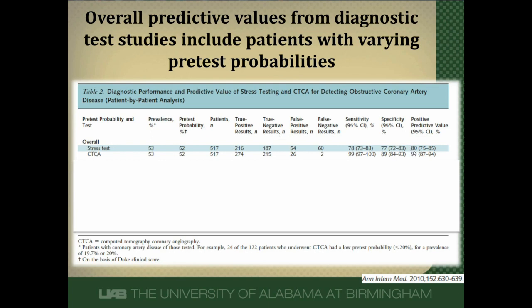If you had a positive stress test, you had an 80% chance of having coronary artery disease. If you had a positive CTA, you had a 91% chance of having coronary artery disease. The problem is that overall results like this include all patients who have very differing pre-test probabilities or prevalence of disease. Our patient sitting in front of us only has one pre-test probability of disease, and it may not be the same as that in the study. When we look at all patients together, their pre-test probability is right at about 50%. But often our patients are at lower or higher risk than the overall study population, so it can be misleading to use this predictive value.